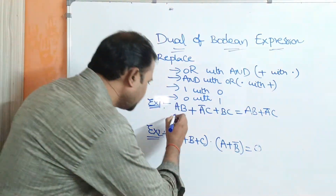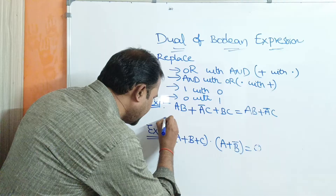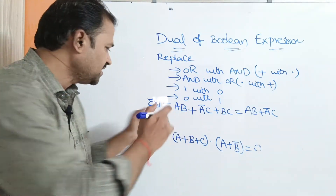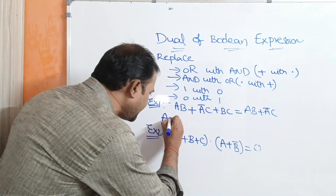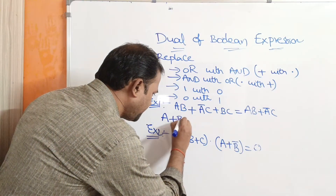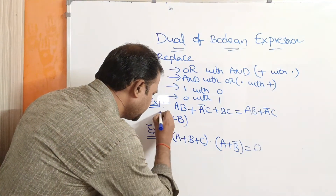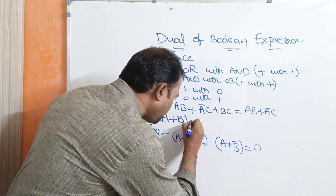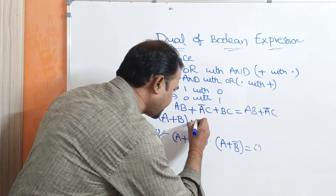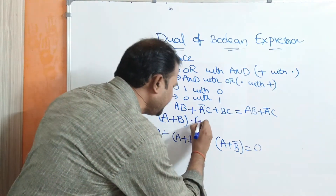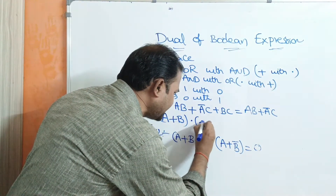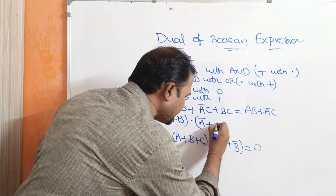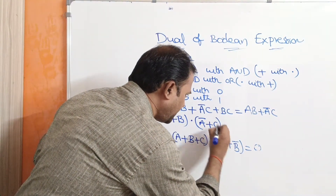Here we have A — write A as it is. Next, A·B: AB means A dot B, so dot is replaced with plus, giving A plus B. Next, plus — the dual of plus is dot. Next, A bar means we write it as it is. A bar into C — dot is replaced with plus, giving A bar plus C.